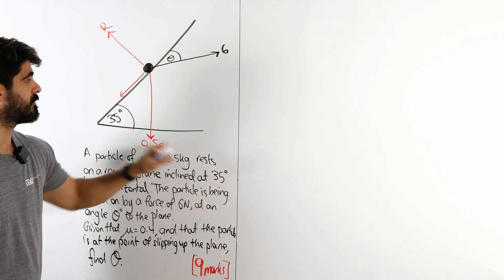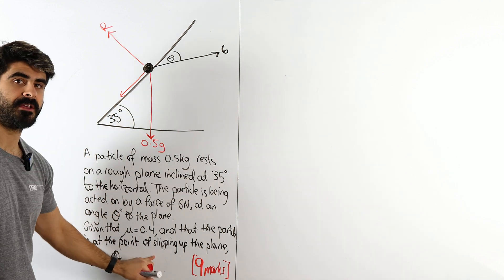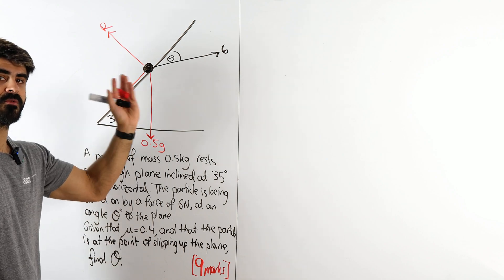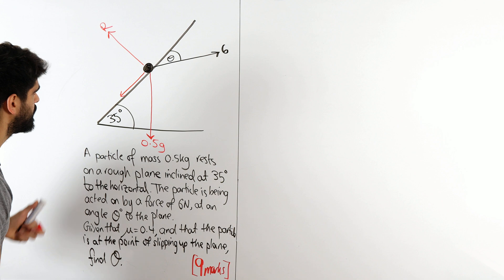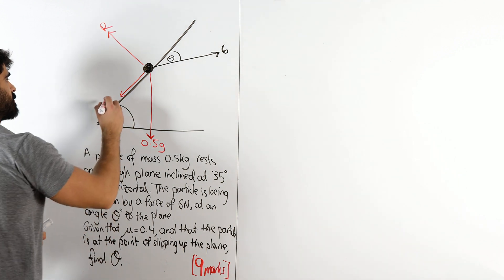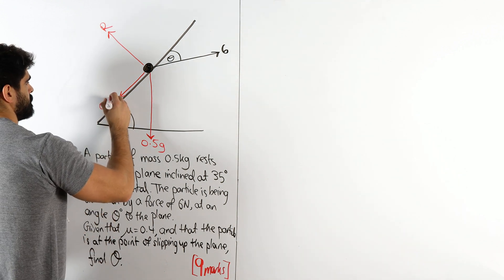Now one thing I always ask my students is, are we going to write f or mu r? You write f if it's just in equilibrium. If that was the case, I would have just put f. But because they're saying it's at the point of slipping, it means that it wants to move up. Friction's at its maximum, this is mu r. So I'm going to write 0.4r.